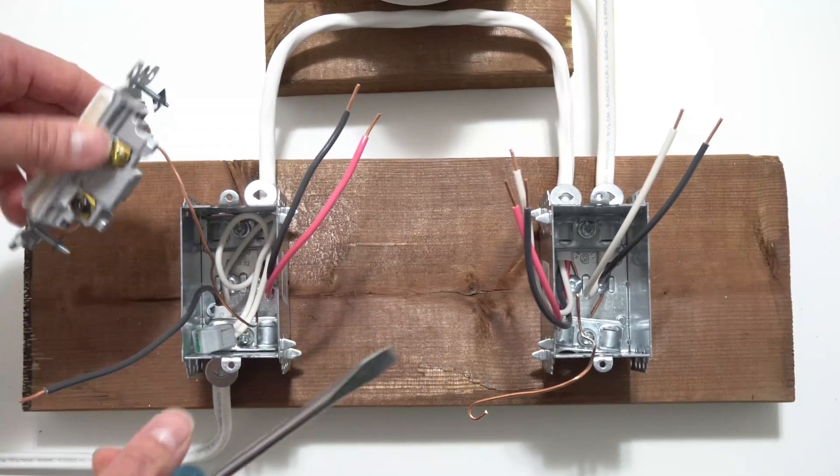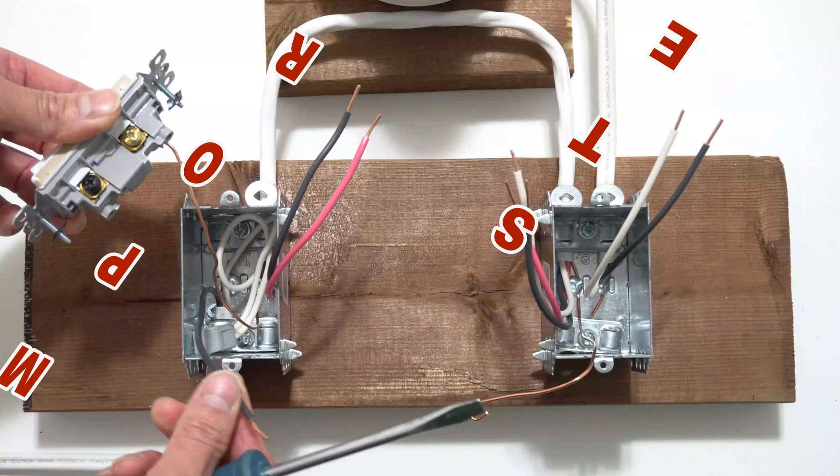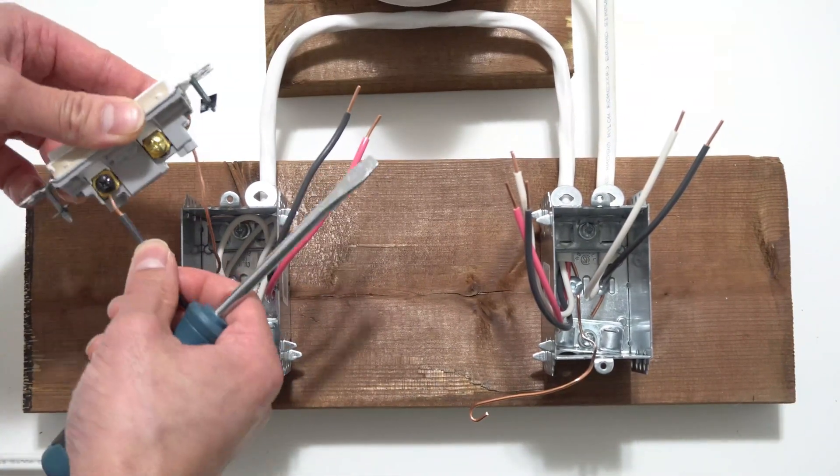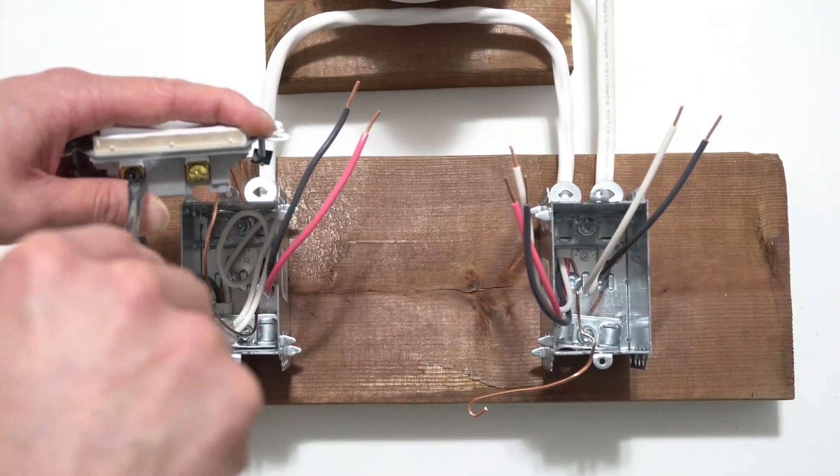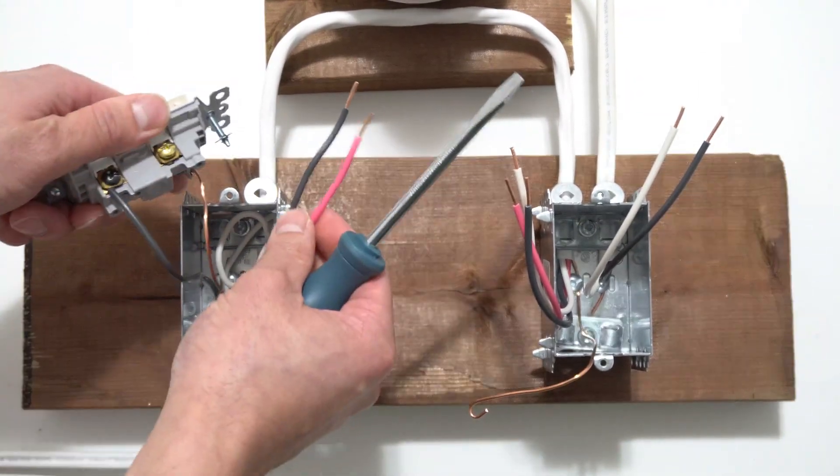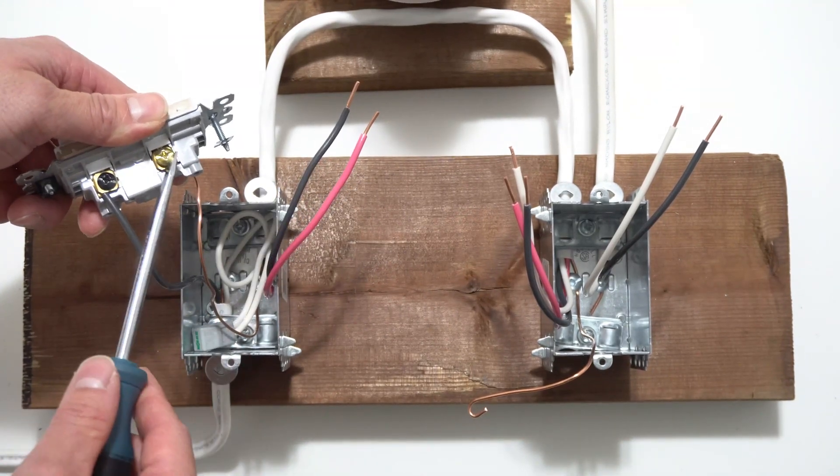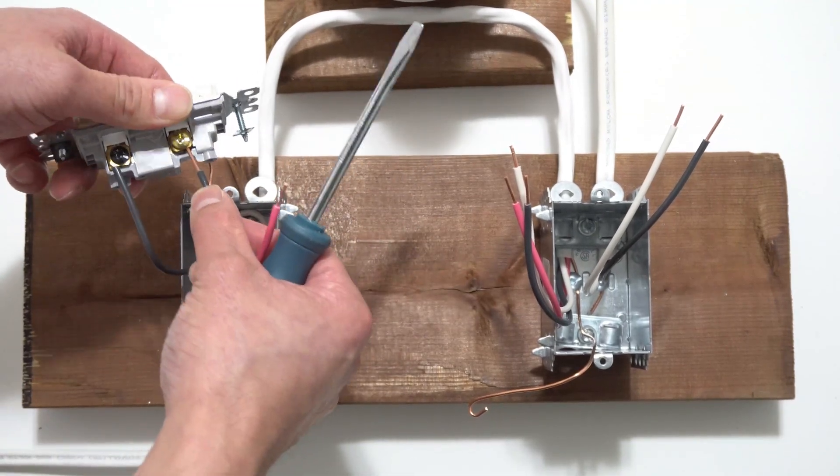Now the next step is very important. This black wire is from the 14-2 wire. It is very important you place this wire under this black screw. Now this next step, it does not matter if you choose black first or red first. Either or does not matter. We can mix and match. It will still work the same.